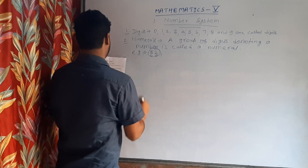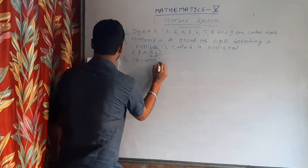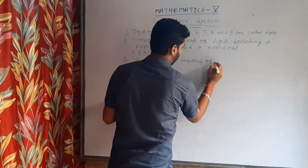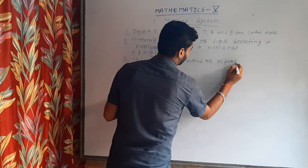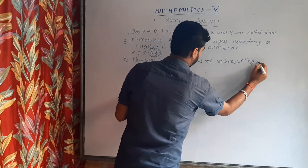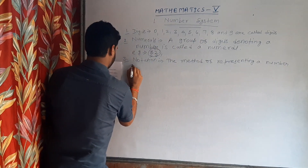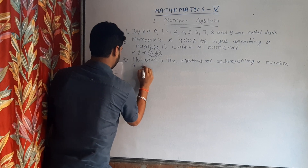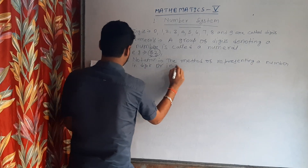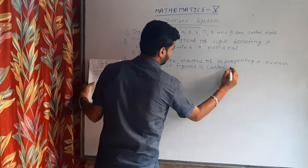Third: notation. The method of representing a number in digits or in figures is called notation.